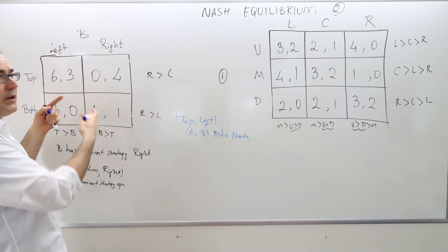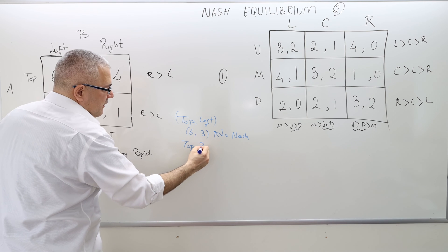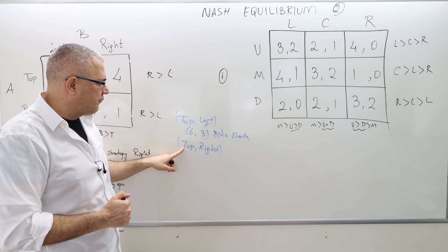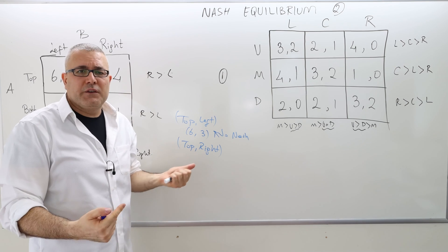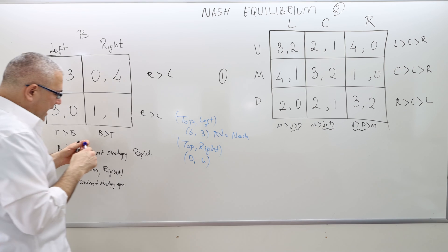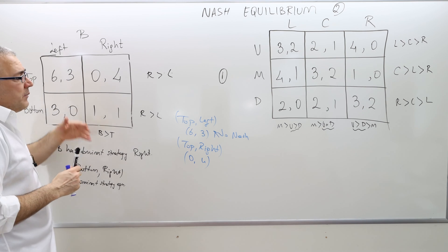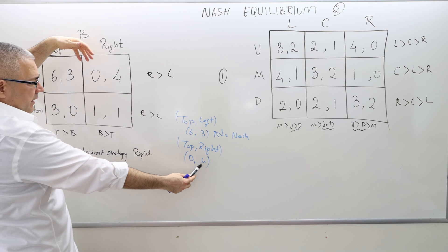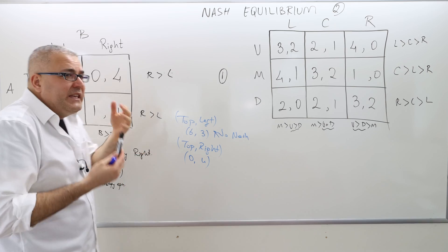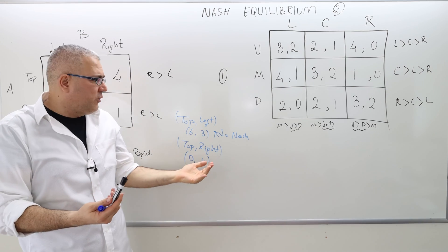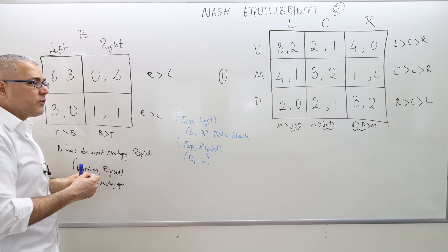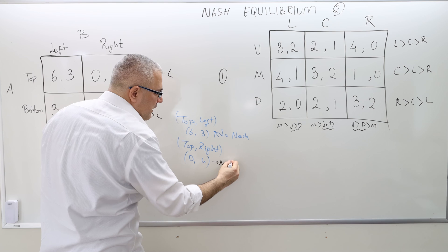What about the top-right outcome? We just mentioned that given player A chooses top, right is the regret-free strategy for player B. But what about player A? With the payoff of 0, player A would say: if I knew my opponent was playing right, I would certainly prefer to play bottom and get 1 rather than top and get 0. So given that he observes his opponent chose right, he regrets his choice of top. Therefore this is again a regretful outcome, and hence not Nash.